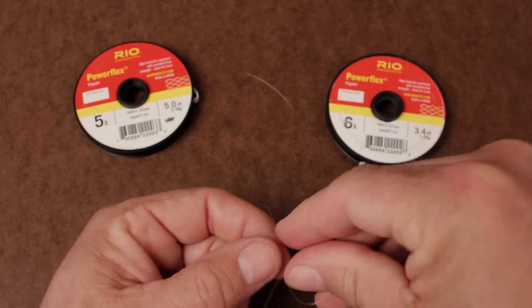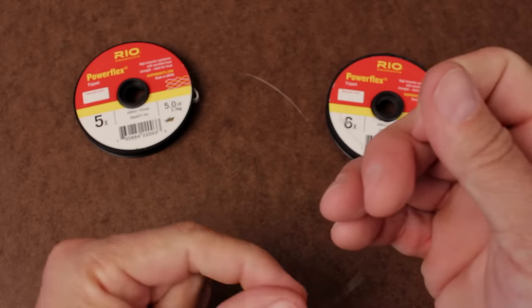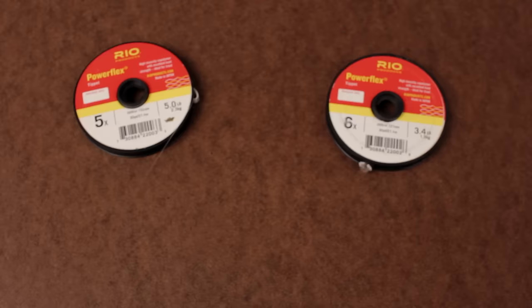Yes, you could use the simpler double or triple surgeon's knot to do this, but the blood knot generally has a better shape and allows you to snip the tags off closer.